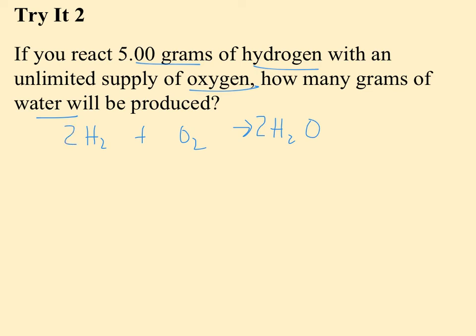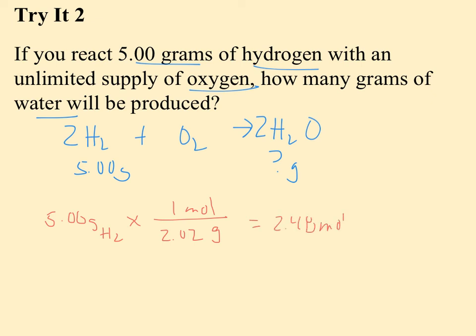So 5 grams of hydrogen, and I want to know how many grams of water will be produced. So I have three steps to complete. First I need to change my 5 grams of hydrogen to moles of hydrogen. So what I know about moles and grams of hydrogen is there's 2.02 grams in a mole. So this is 2.48 moles of H2.